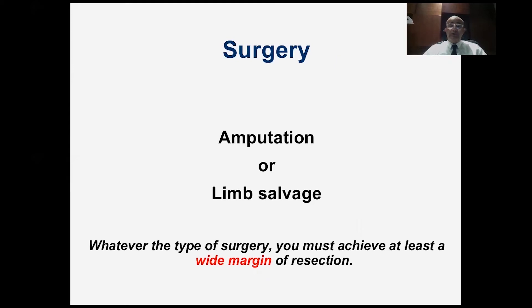Surgery, which is the main topic of our lecture today, could be either amputation or limb salvage. But whatever you do — whether amputation or limb salvage — you always have to achieve what we call a wide margin of resection.